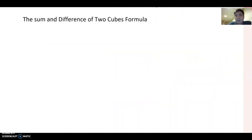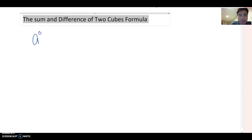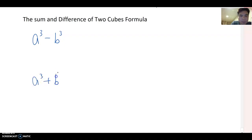There is another case of binomial factoring. Look at this title: The sum and difference of two cubes formula. So it means whenever you have any binomial form looks like a cube minus b cube or a cube plus b cube.